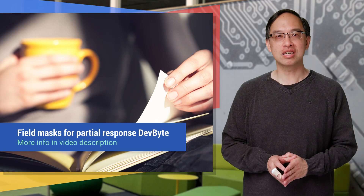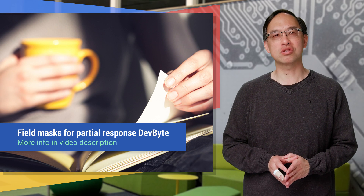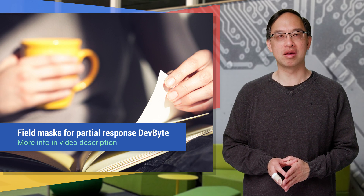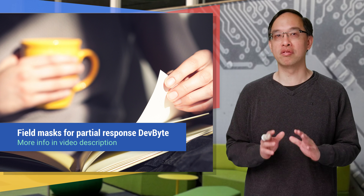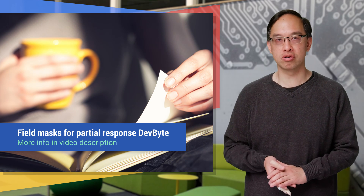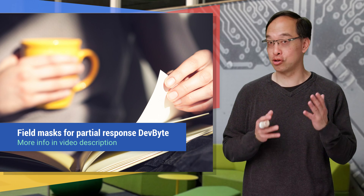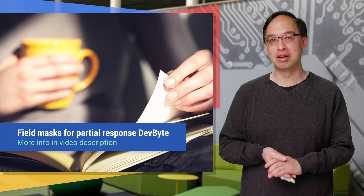In the last video, we discussed reading data from an API and how you can use field masks to control the amount of data that gets returned — partial response.